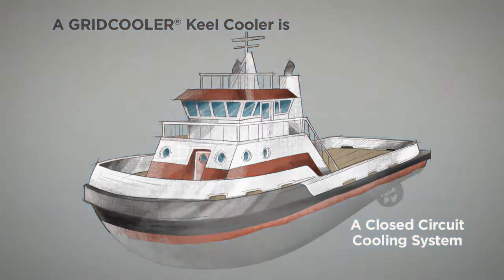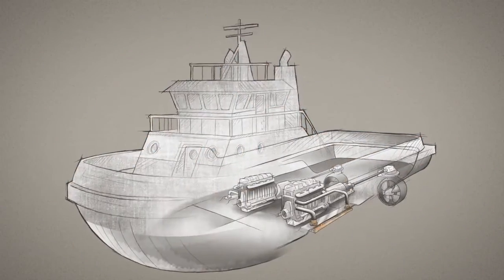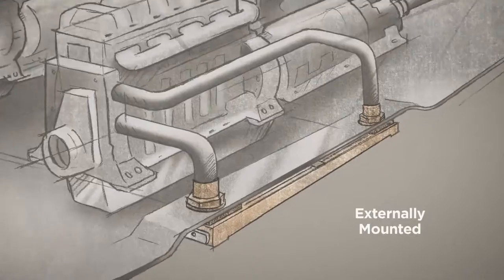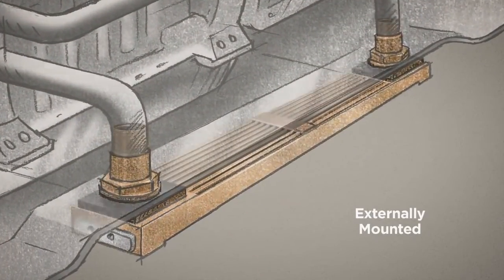A grid cooler keel cooler is a closed circuit cooling system mounted externally on a ship's hull below the waterline. Cooling is simple and effective.